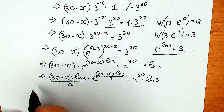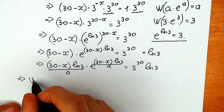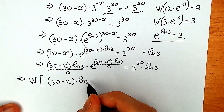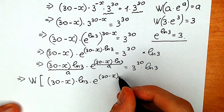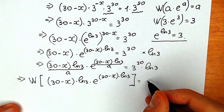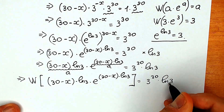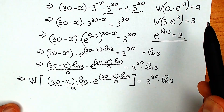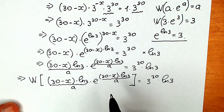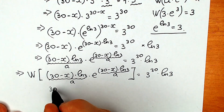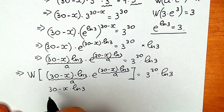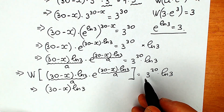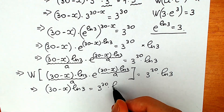Now let's apply the Lambert W function to both sides. On the left side, W of (30 minus x times natural log 3 times e to the power (30 minus x times natural log 3)) equals 3 to the power 30 times natural log 3 on the right side. According to the Lambert W function, the left side simplifies to just a, which is 30 minus x times natural log 3.